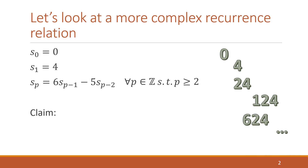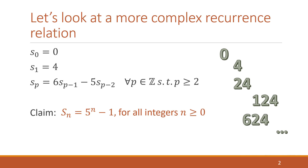I'd like to claim that a closed form solution for this recurrence relation is 5^n − 1 for all integers n ≥ 0. So s(n) = 5^n − 1 for all n ≥ 0. In this video, we're going to prove this using strong induction.